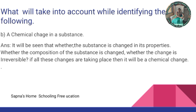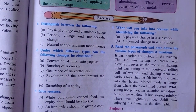B: chemical change in a substance. It will be seen whether the substance has changed its properties. If the properties and composition have changed, and new changes are taking place, then it will be a chemical change.